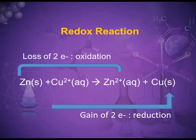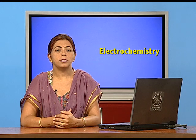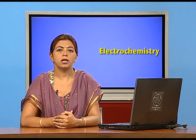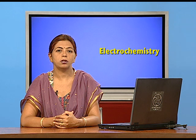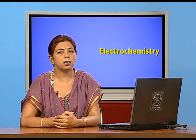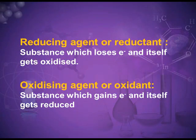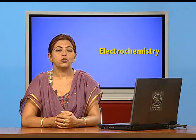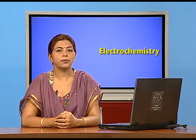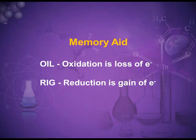Zinc is oxidized and copper is reduced. We can clearly see the simultaneous loss and gain of two electrons, which is known as the redox reaction — one substance is oxidized and the other is reduced. The substance which loses electrons is itself oxidized and is known as the reducing agent. The substance which gains electrons is itself reduced and is known as the oxidizing agent.